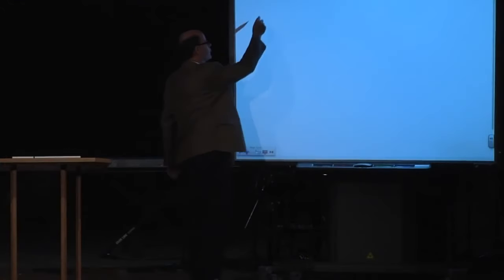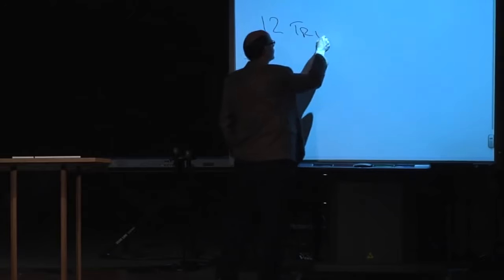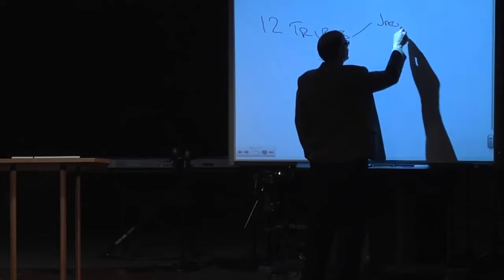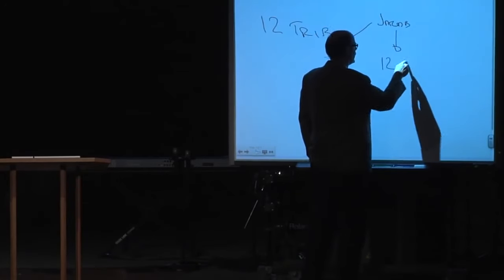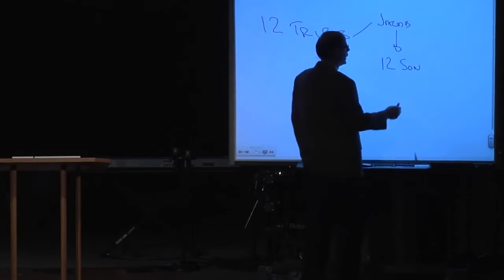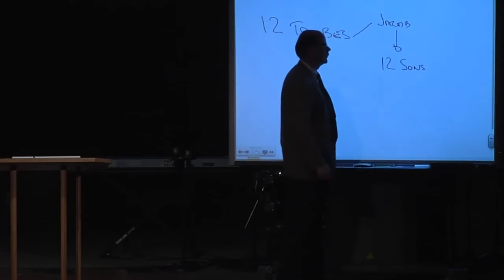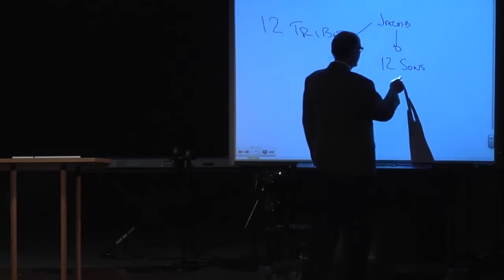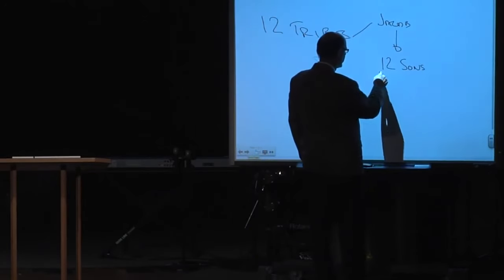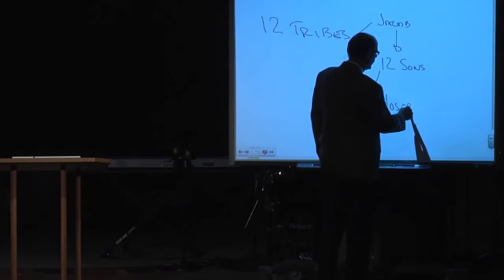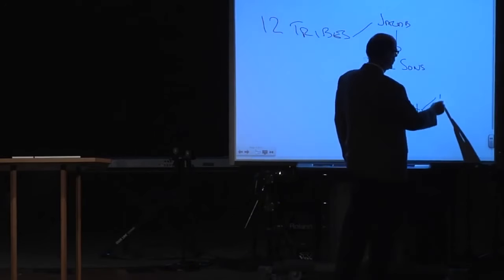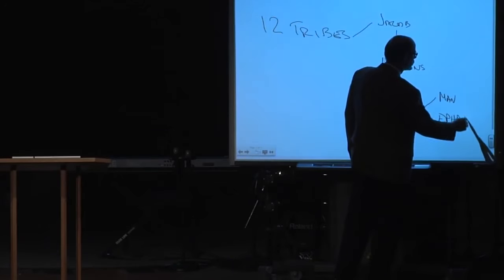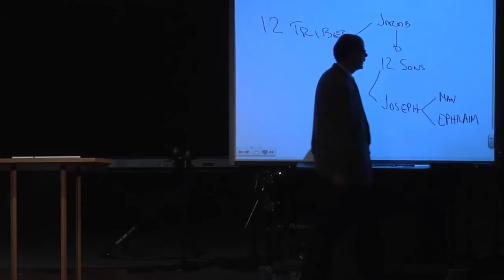There are 12 tribes that God, they're the 12 sons of Jacob. Jacob has 12 sons and those sons become the 12 tribes. But Manasseh, actually one of the sons is Joseph, he's one of the 12. And Joseph has two sons, Manasseh and Ephraim. What is really interesting, and I will say that I've thought about this for decades.